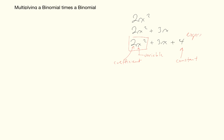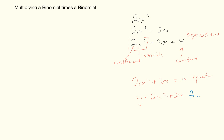These are all expressions. But 2x squared plus 3x equals 10 has moved from being an expression to being an equation. And if we write y equals 2x squared plus 3x, that's an equation with two different kinds of variables, which moves us from expressions to equations to a function — because a function is a relationship between two variables.